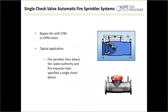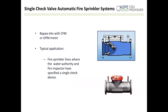Single check valves for automated fire sprinkler systems are included because they are relatively common, but they are not true backflow preventers — a single check is not a backflow preventer. They sometimes come with a metered bypass, and are sometimes okayed by the water authority and fire inspector for sprinkler lines, but for the most part they exist because they are grandfathered in. They are being replaced more and more with actual backflow preventers.